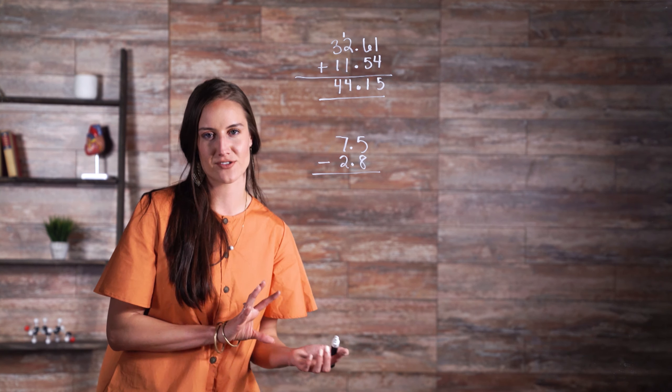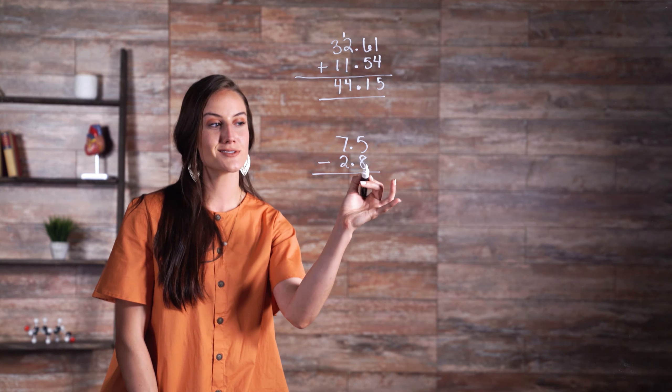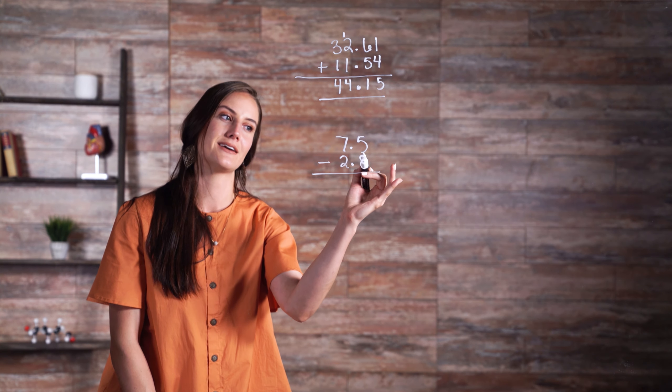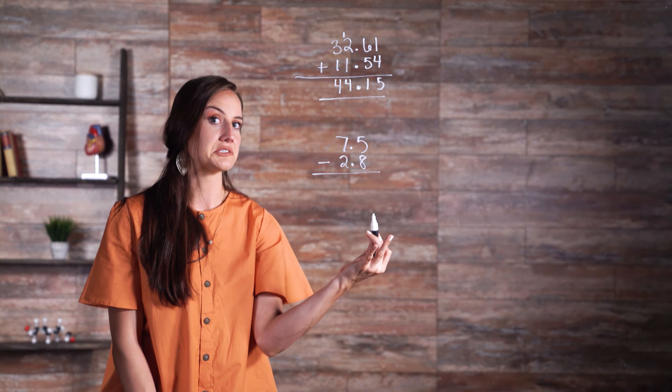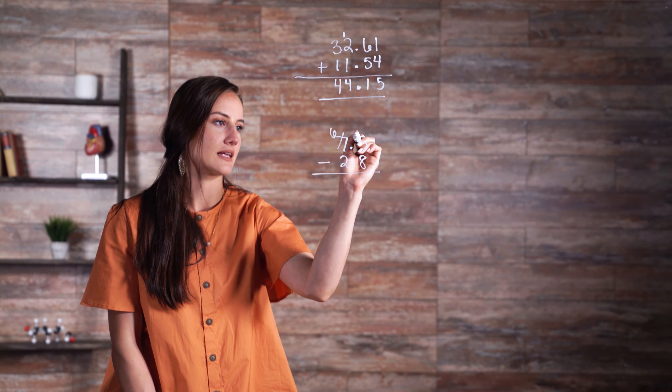Begin to subtract as you would any subtraction problem, starting in the tenths column. You will need first to borrow from our ones column, because 5 - 8 doesn't work out. So we take 1, make this 6, and then carry it over.